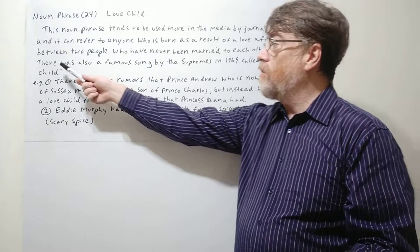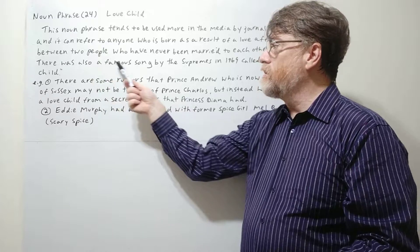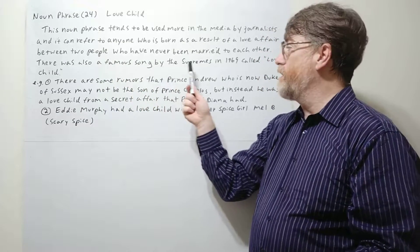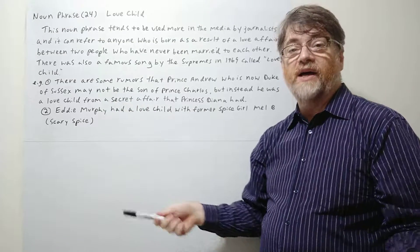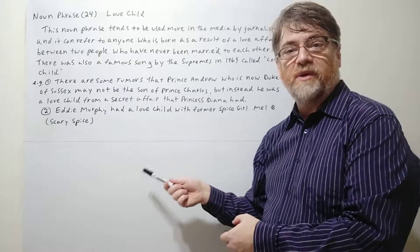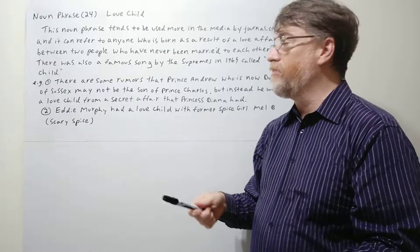Let's continue. There was also a famous song by the Supremes in 1969 called Love Child, also about somebody who was born out of wedlock probably.